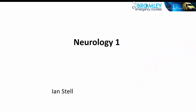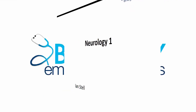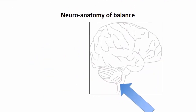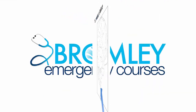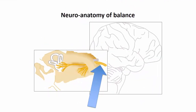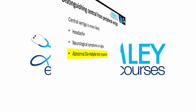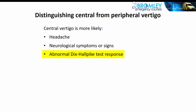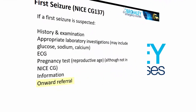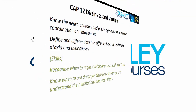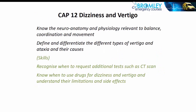This tutorial is designed to help with preparation for the FRCM Intermediate Examination. This is the first of two tutorials on subjects to do with neurology. So let's start off with Common Acute Presentations 12, which is Dizziness and Vertigo.